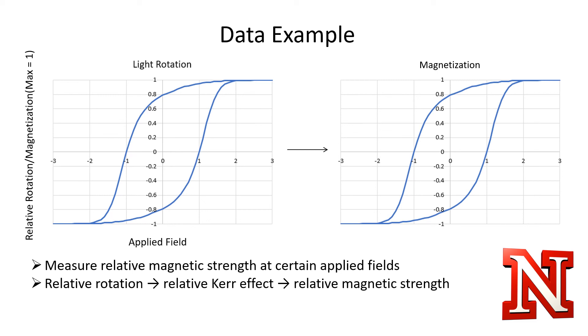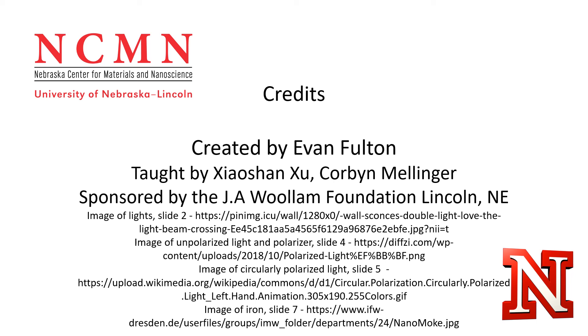So by fitting our data to be relative to the maximum and minimum values, we're able to transfer seamlessly between the rotation that we observe, the relative strength of the Kerr effect, and thus the relative strength of the magnet. I hope you enjoyed watching the video and now understand something about the magneto-optic Kerr effect as well as how it relates to our work here at Ferret and Film Labs.